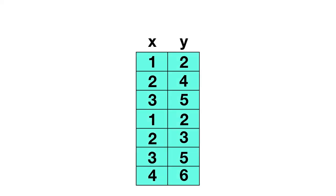Here's another table. Is this table a function or a relation? On this table, several inputs are listed more than once. We can see an input of 1 shows up twice, but both times an input of 1 gives us an output of 2 — that's okay. Next, the input of 2 is also listed twice. One time the input of 2 gives us an output of 4, but the other time it gives us an output of 3. So this is an example of the same input giving two different outputs. Therefore this is not a function; this is a relation.